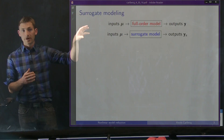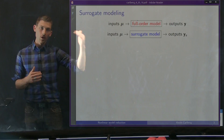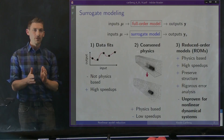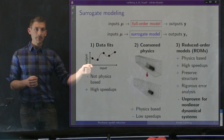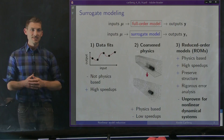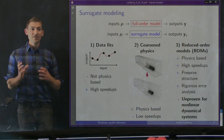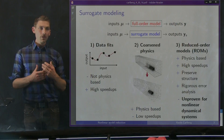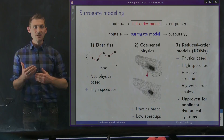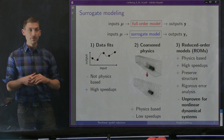What we would like to do is replace that expensive full order model with a cheaper surrogate model that provides a nearby mapping μ to y_s, where y_s is somehow close to y for all parameter instances μ. There are three classes of approaches. Number one is a purely data-fit approach, where we run our full order model for several points in the input space and fit the response using Kriging or polynomial chaos. While this gives high speedups and is black-box, it is not a physics-based approach — at a non-training point, all we have is a pure data fit with no insight into the physics.